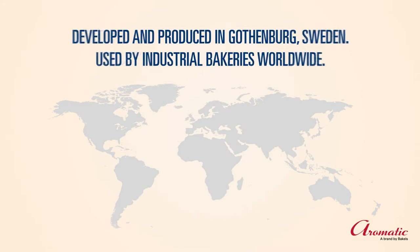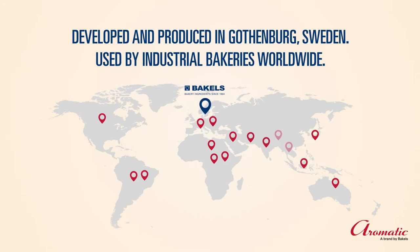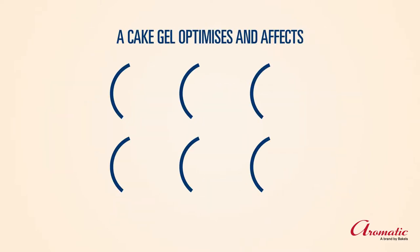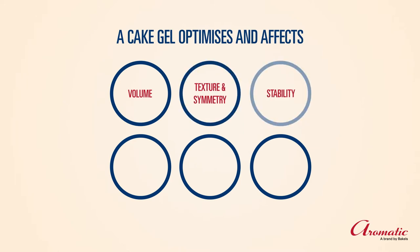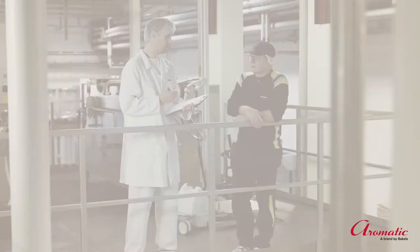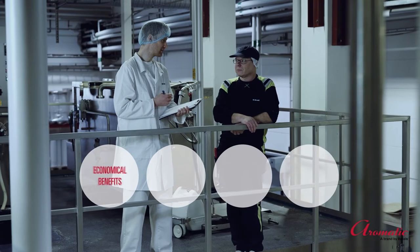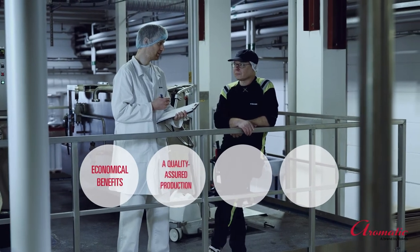Developed and produced in Gothenburg, Sweden, and used by industrial cake manufacturers worldwide, a cake gel optimizes and affects volume, texture, symmetry, stability, freshness, and fat dispersion, and enables machinability.